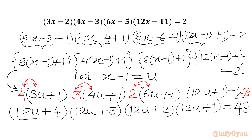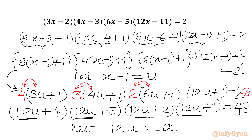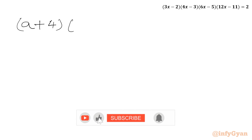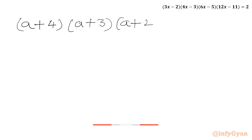Now you can see 12u, 12u, 12u, and 12u. So better is to consider 12u equal to a. So our equation becomes (a plus 4)(a plus 3)(a plus 2)(a plus 1) equal to 48.